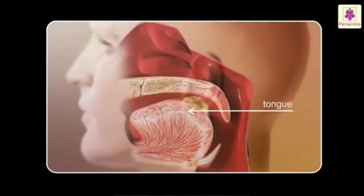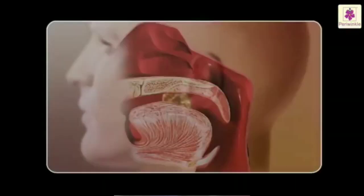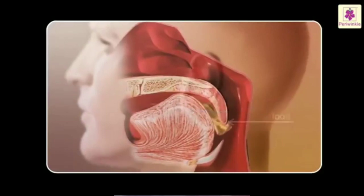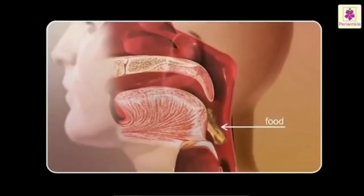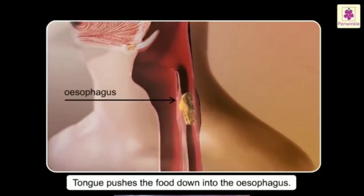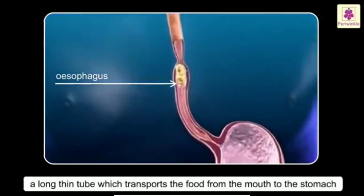Then food goes to the pharynx (Drasannikava). The pharynx is a common cavity for both the digestive tract and the respiratory system. Its function is to push food from the mouth cavity into the esophagus. The esophagus then pushes the food from the mouth cavity or pharynx into the stomach.